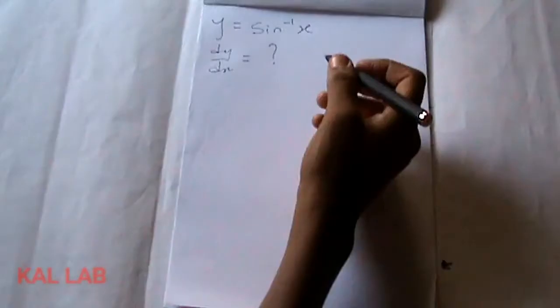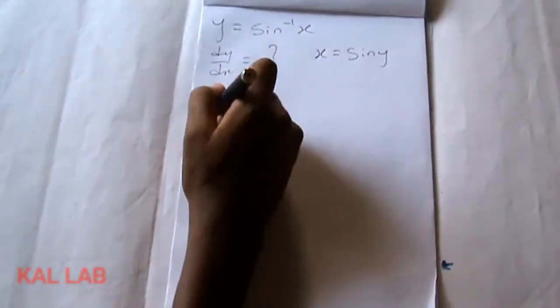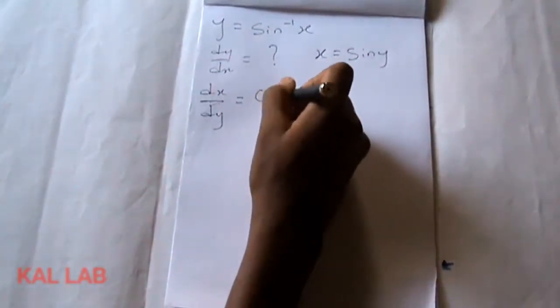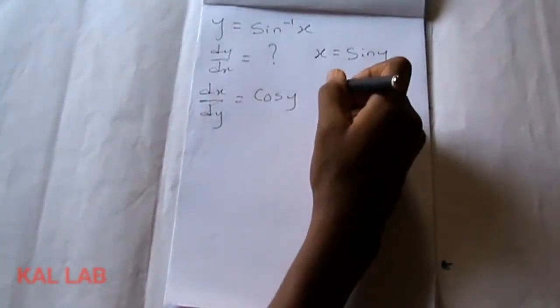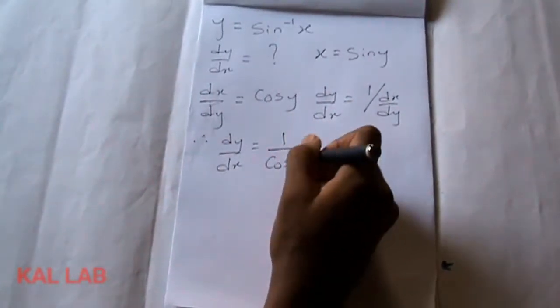If y equals sine inverse of x, it means x is equal to sine y. If we find dx/dy, that would be equal to cos y. But this is not our answer because we are looking for dy/dx, and we know that dy/dx is equal to 1 over dx/dy. So therefore dy/dx would be equal to 1 over cos y.